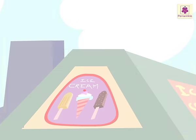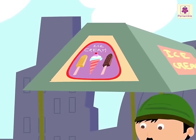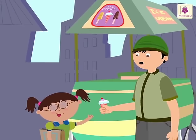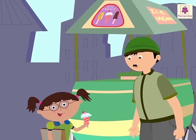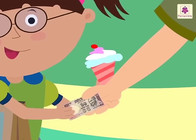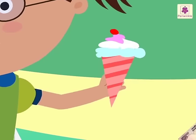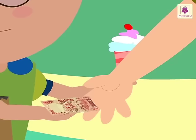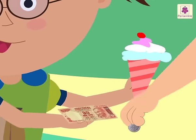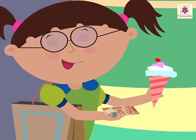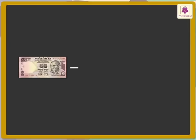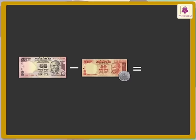Now she wants to buy an ice cream, so she goes to an ice cream seller. She buys an ice cream and gives a 50 rupee note to the ice cream seller. He gives her a 20 rupee note and a 5 rupee coin back, so he gave her 25 rupees back. So what is the cost of the ice cream? 50 minus 25 is equal to 25 rupees. The cost of the ice cream is 25 rupees.